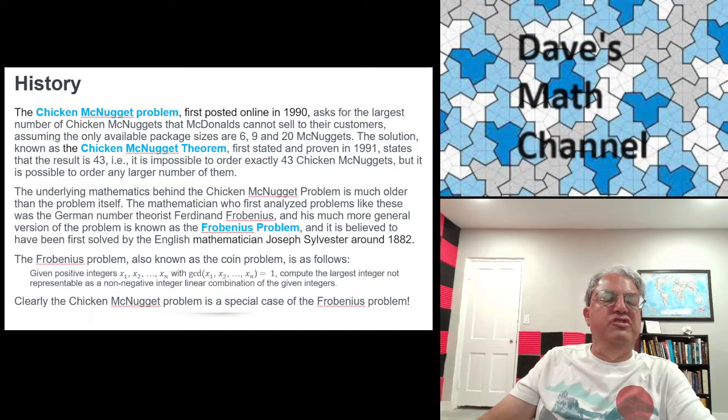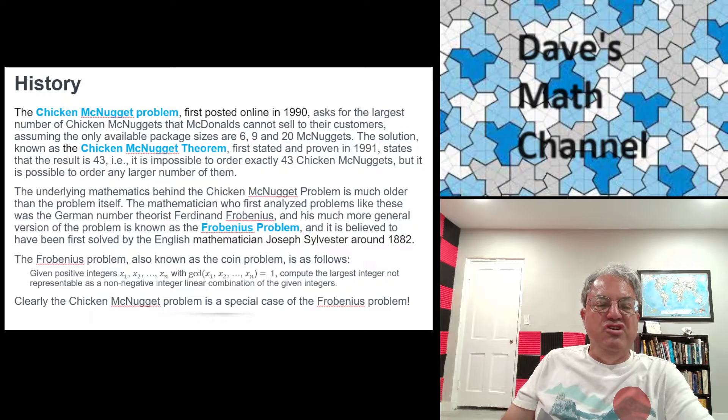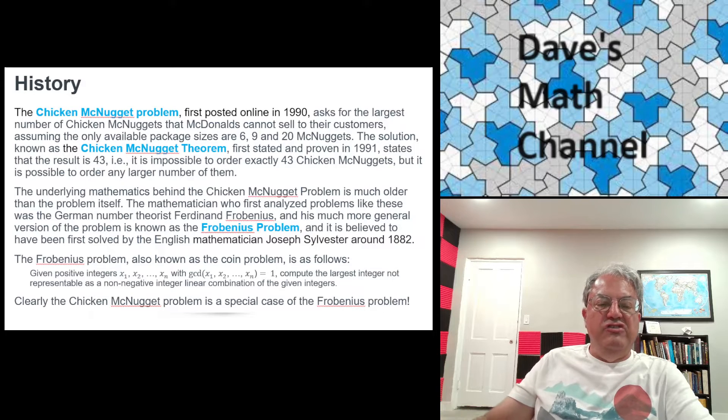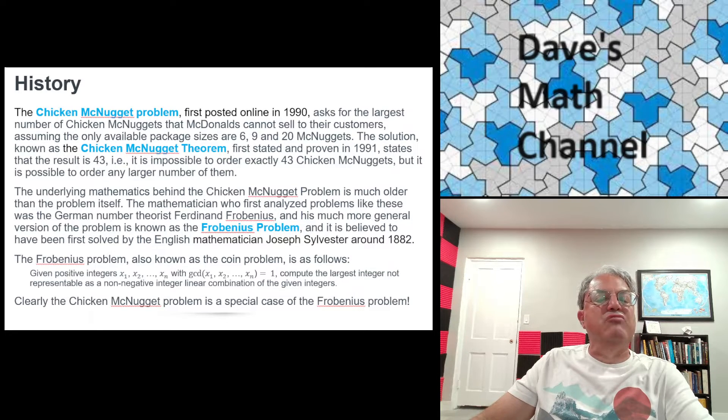So how do we prove it? And I want to go through the history of this problem a little bit. This problem is kind of misnamed because the Chicken McNugget problem is not the original problem like this. There were problems like this that were studied back in the 19th century. The first person to seriously study this kind of problem was a 19th century German mathematician named Ferdinand Frobenius. And he posed this problem, a much more general version of this problem, became known as the Frobenius problem.